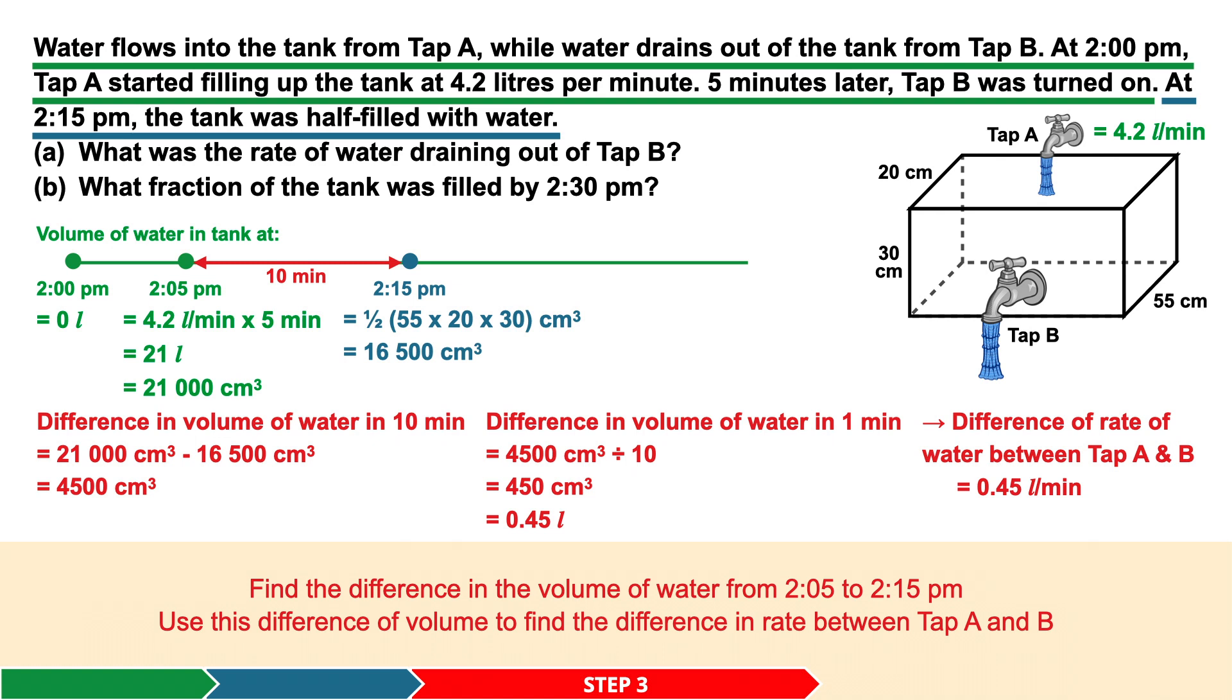What this means is that the difference in the rate of water between tap A and tap B is 0.45 liters per minute.